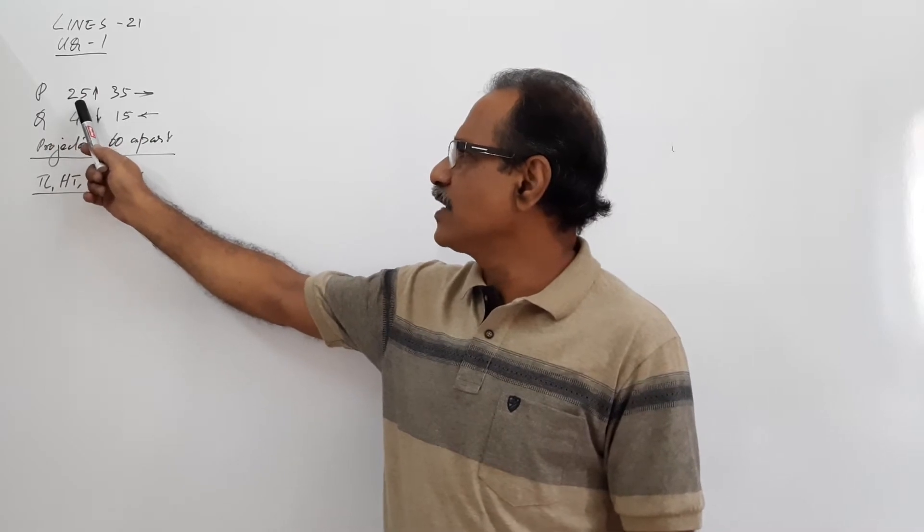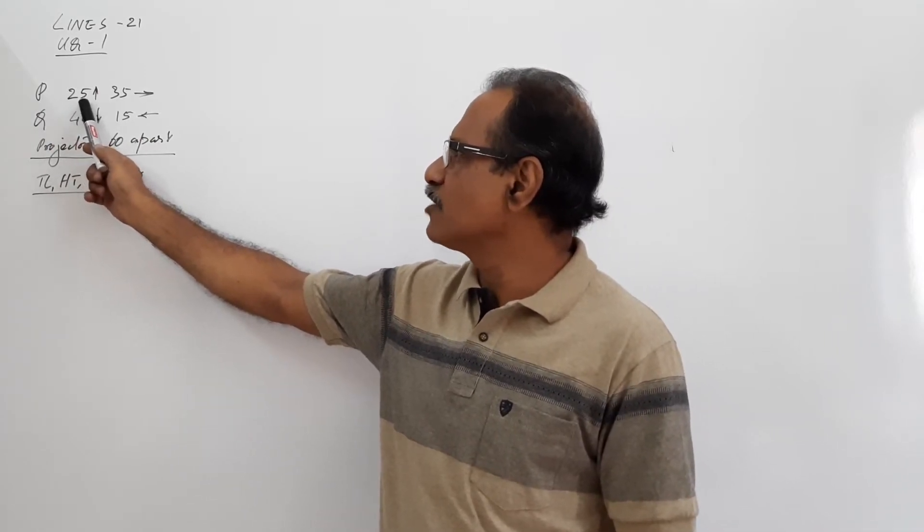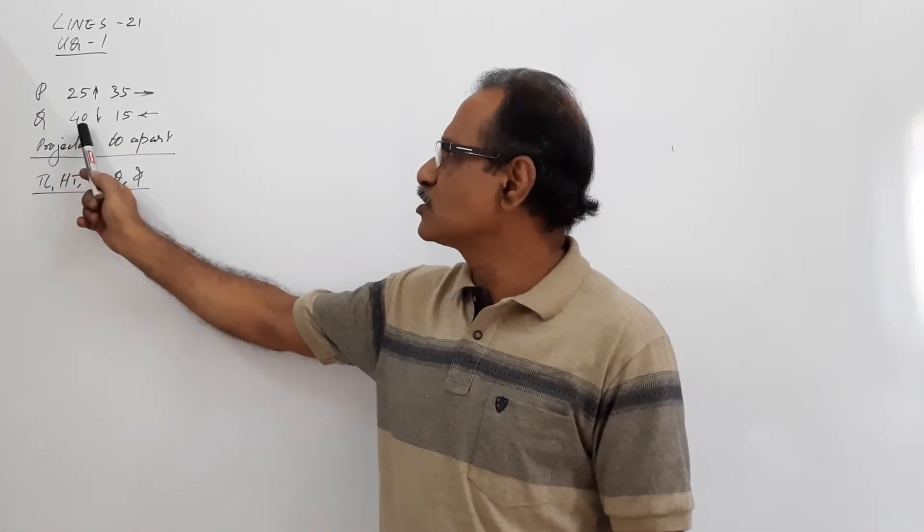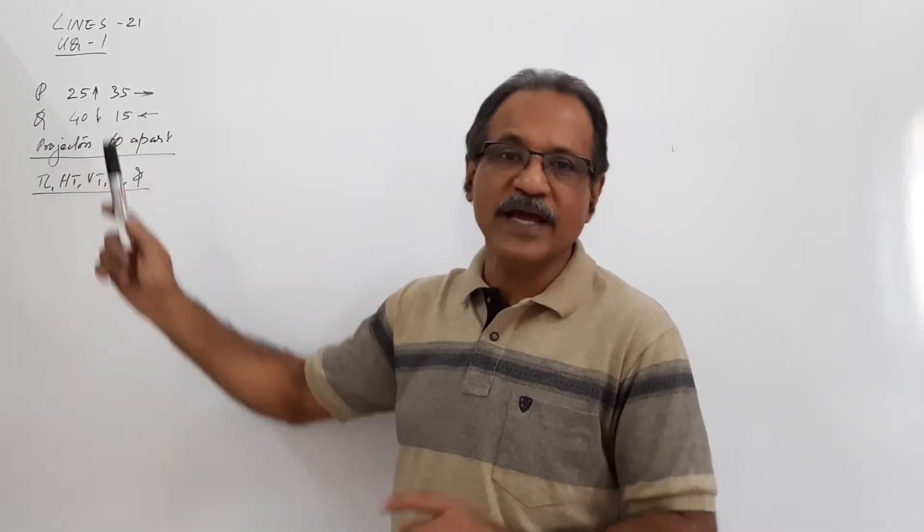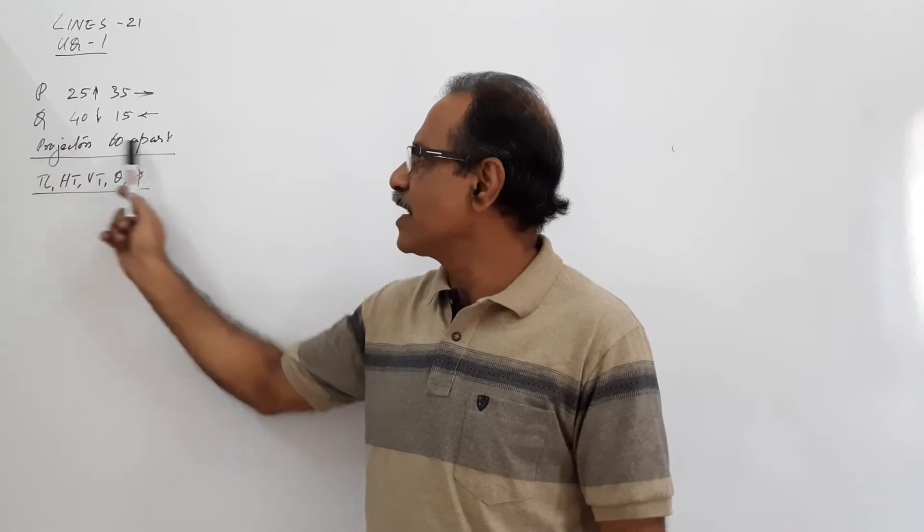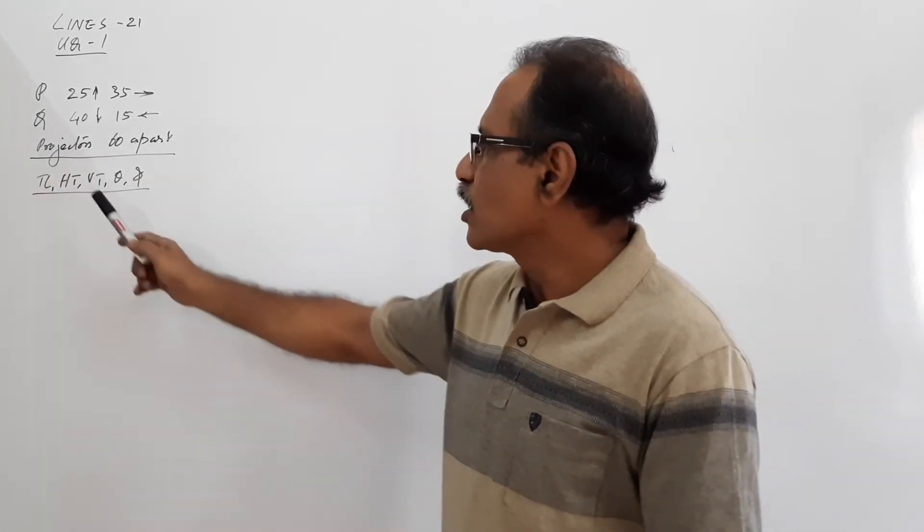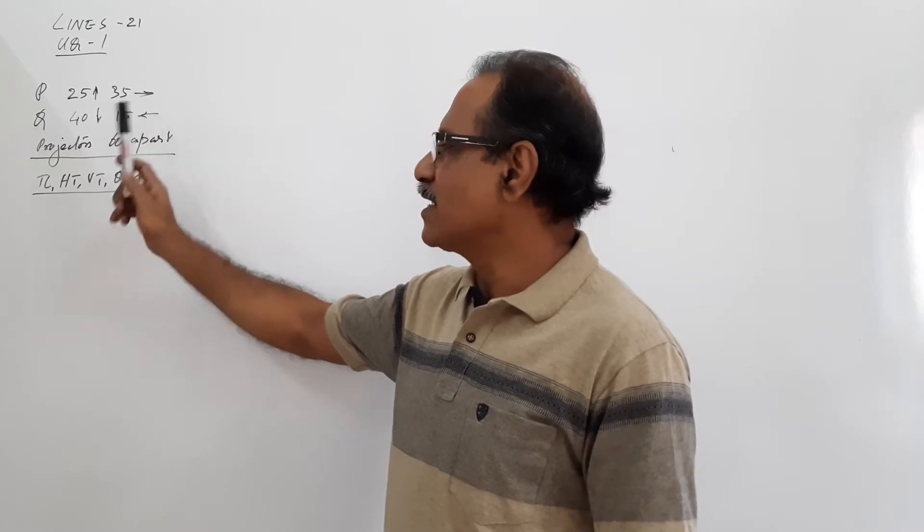The question: Line PQ whose end P is 25 above HP and 35 in front of VP. The other end Q is 40mm below HP and 15mm behind VP, and the projectors of P and Q are 60mm apart. You are asked to draw the plan and elevation and point out true length HT, VT, theta and phi.